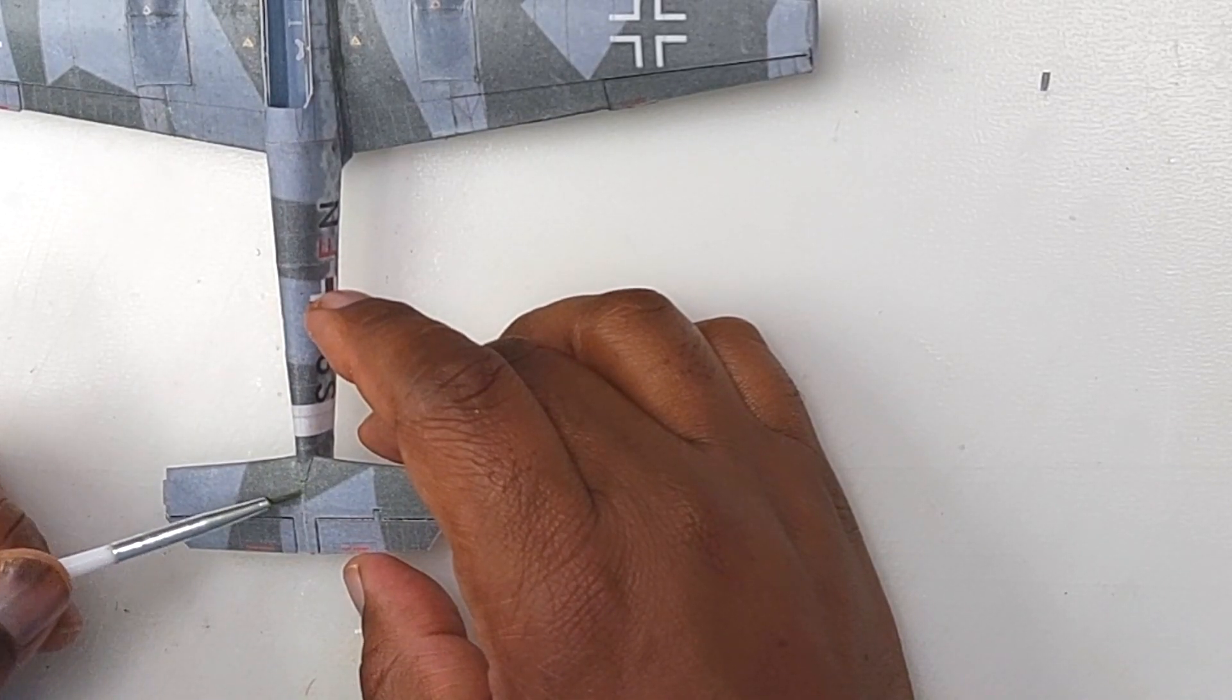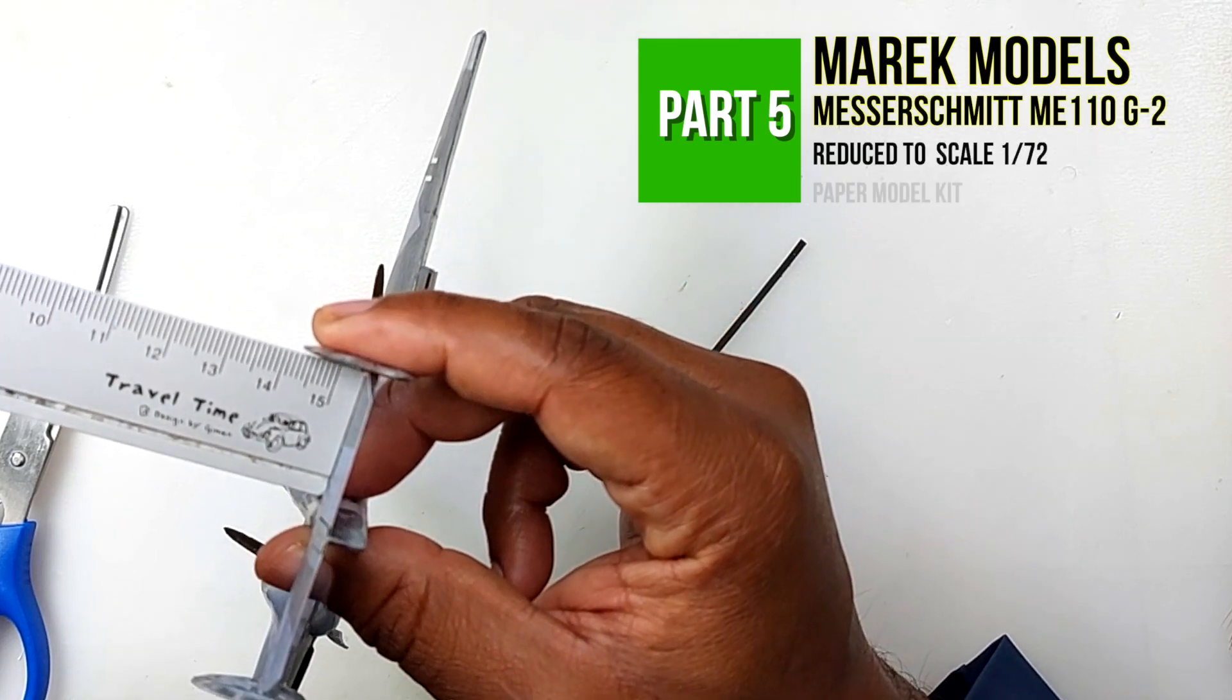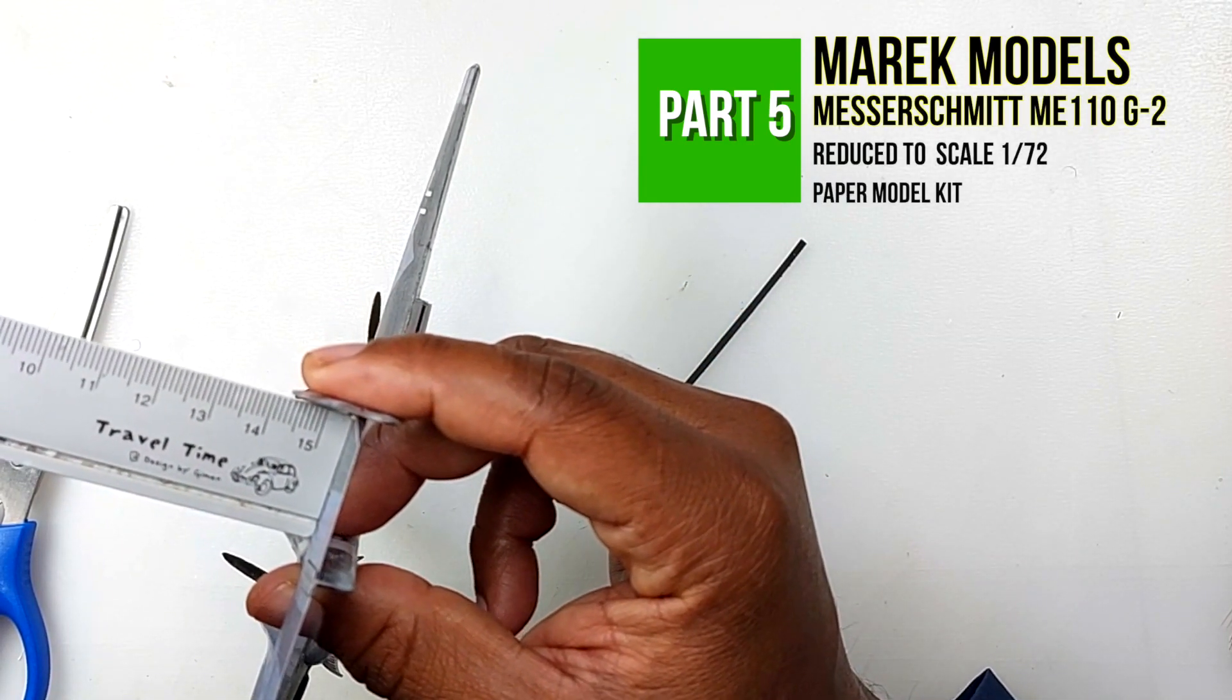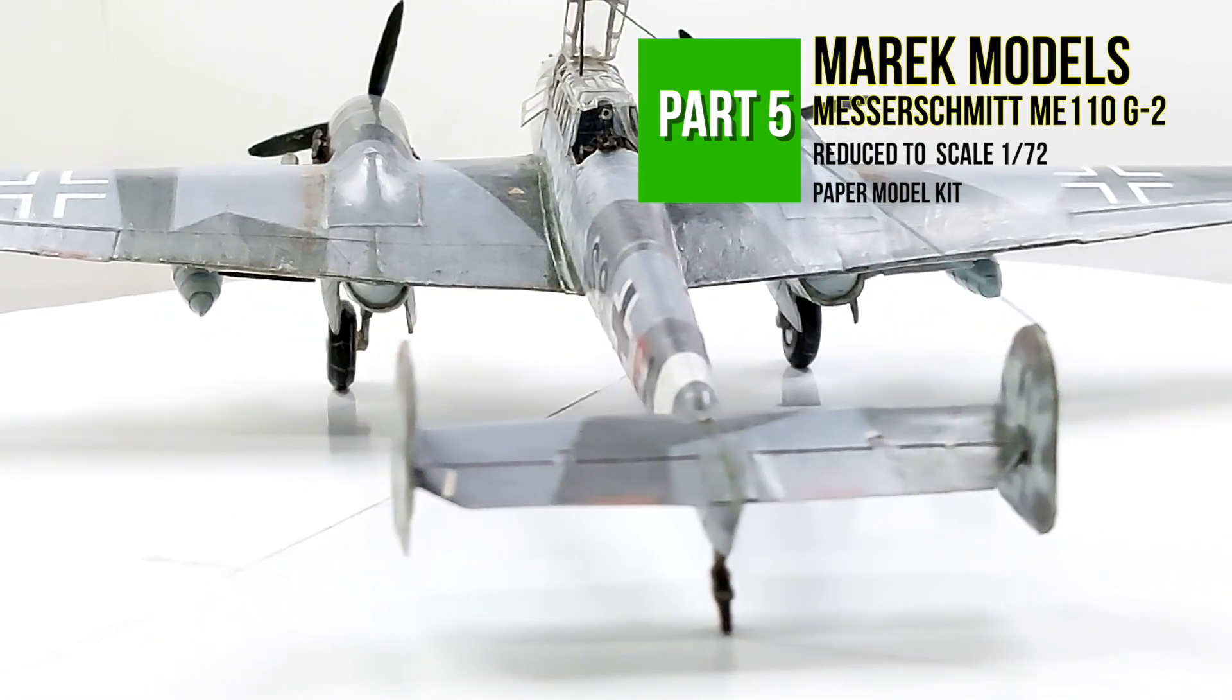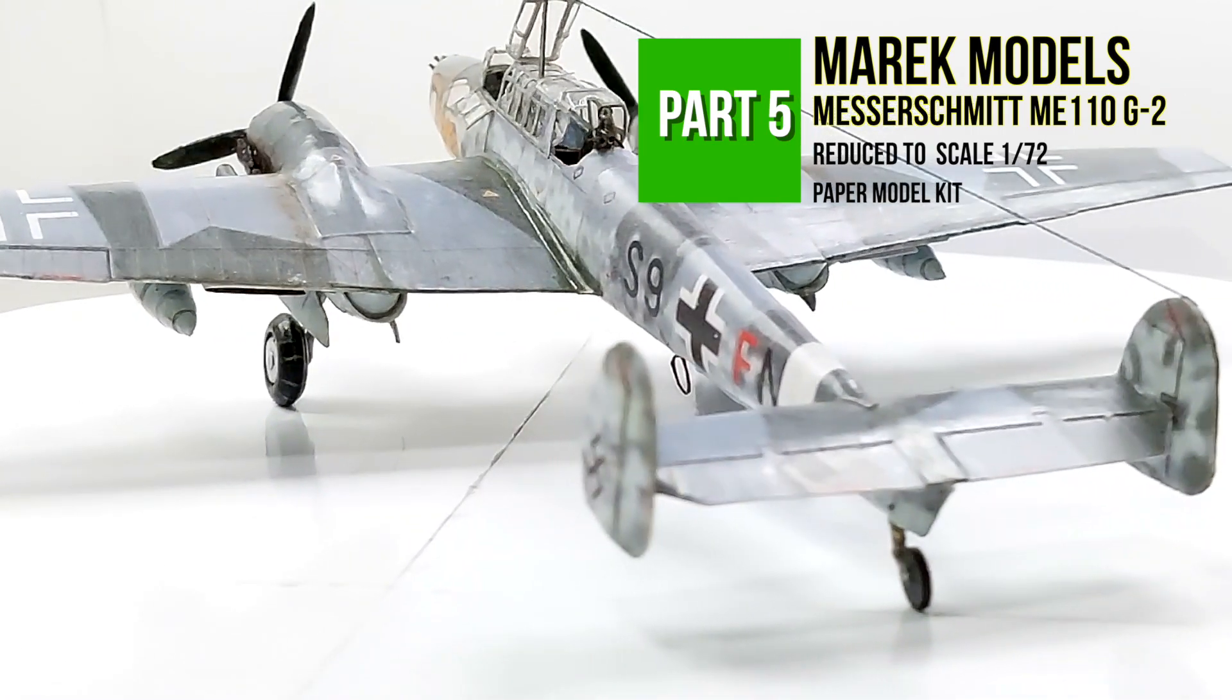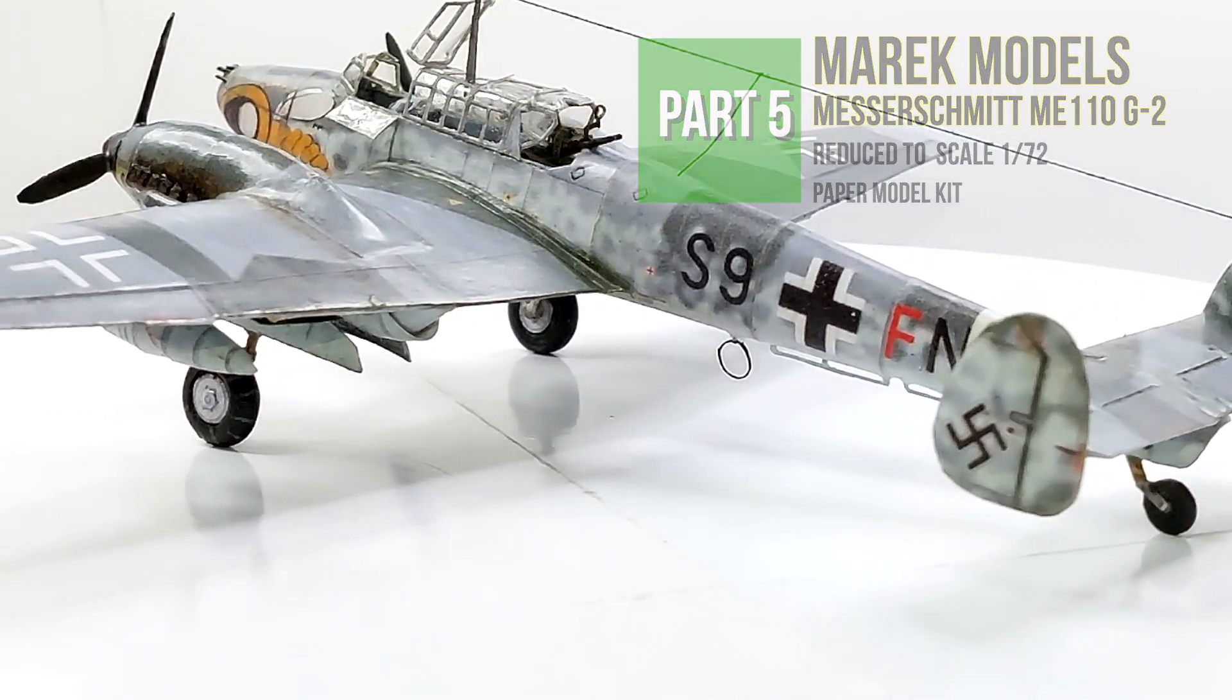Greetings fellow modelers. Today let's look at four things: creating the elevator, doing the rudder, making the landing gear main, and how we do the wheels. So without further delay let's dive right in and welcome to paper modeling.